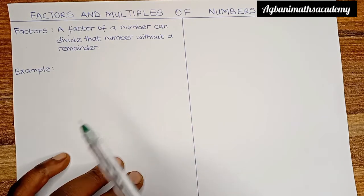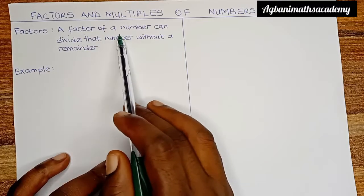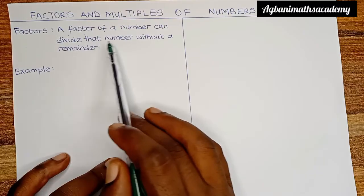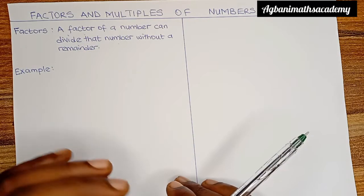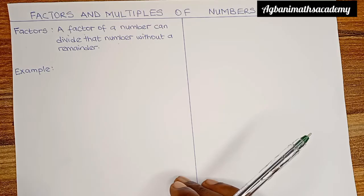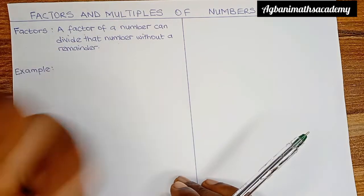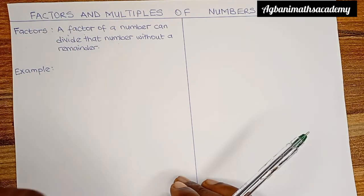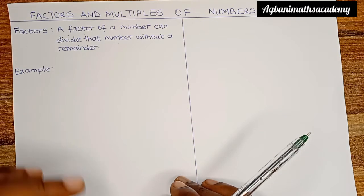What are factors of a number? A factor of a number can divide that number without a remainder. So if I want to know if a number is a factor of another number — usually a bigger number — then that smaller number can divide the bigger number without leaving a remainder. If after dividing there is a remainder, then we know that the smaller number is not a factor of the larger number.